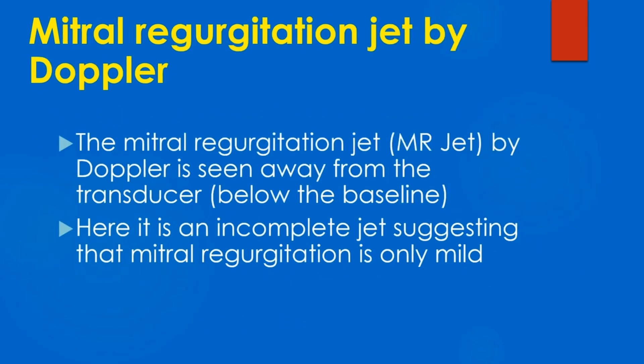The mitral regurgitation jet by Doppler is seen away from the transducer, below the baseline. It is an incomplete jet in this case, suggesting that mitral regurgitation is only mild.